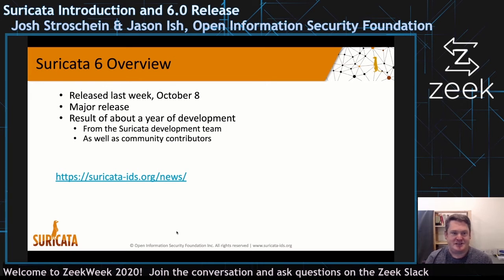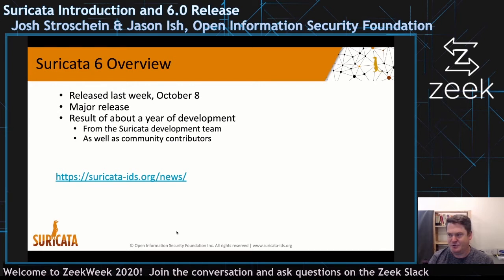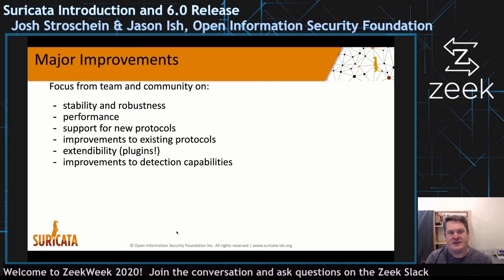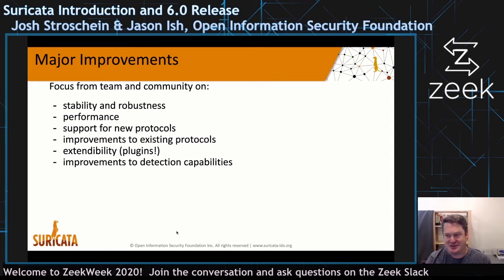Last week, we released Suricata 6 — it's a major release, the result of about a year of development time from the Suricata development team as well as many community contributors. It's currently the top story on our news page blog. For the major improvements, we are currently focusing on: stability and robustness, performance, support for new protocols, improvements to existing protocols, extendability via plugins, and improvements to the detection capabilities — which means the rule language for us.